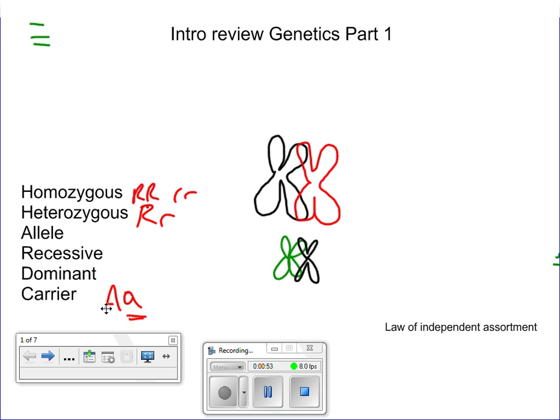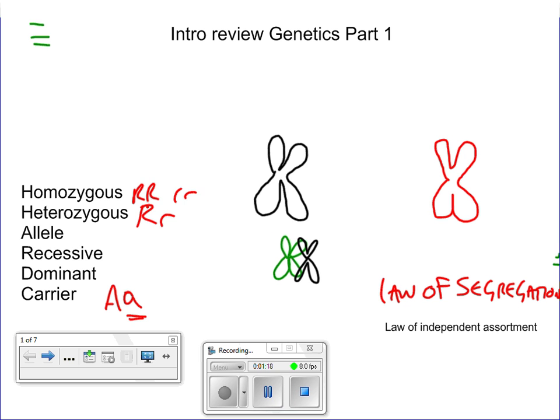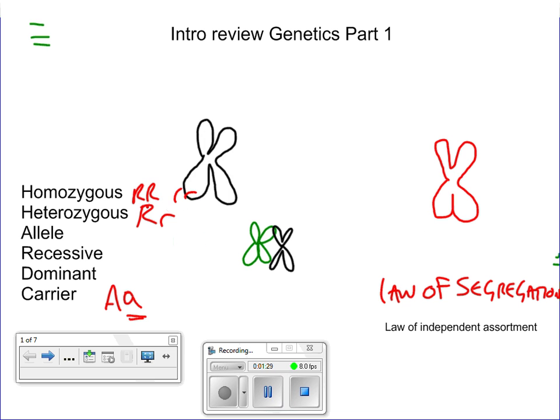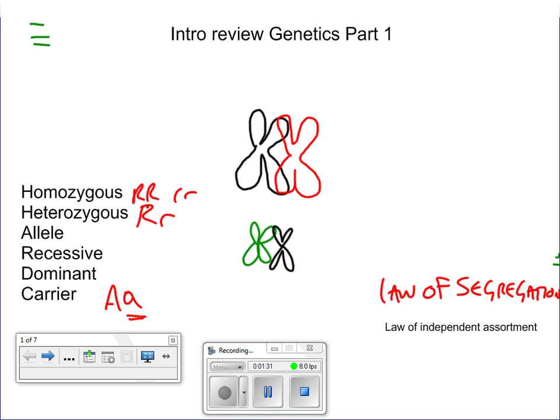Law of independent assortment and law of segregation are some of the first laws applied to Mendelian genetics. We'll talk about law of segregation first. This is simply saying that when those homologous pairs line up in the metaphase plate and proceed to anaphase, one chromosome moves one way and one chromosome moves the other way. The gametes that result will only get half the information, we want the gametes to be haploid, not diploid.